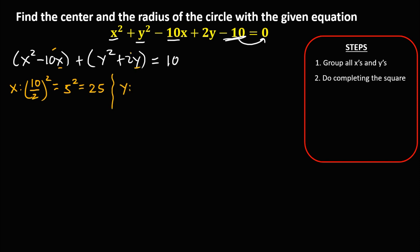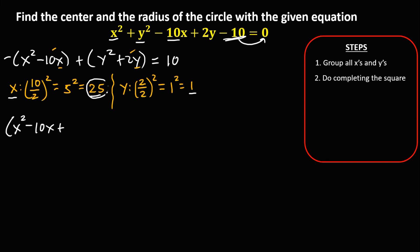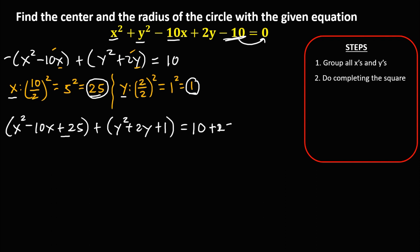Then for y, take this number — that's 2 — then divide by 2 and take the square. 2 divided by 2 is 1, and 1 squared is 1. Then we need to add these numbers to create a new equation: x squared minus 10x plus 25, plus y squared plus 2y plus 1, equals 10. The numbers added on the left must also be added on the right: plus 25 and plus 1.